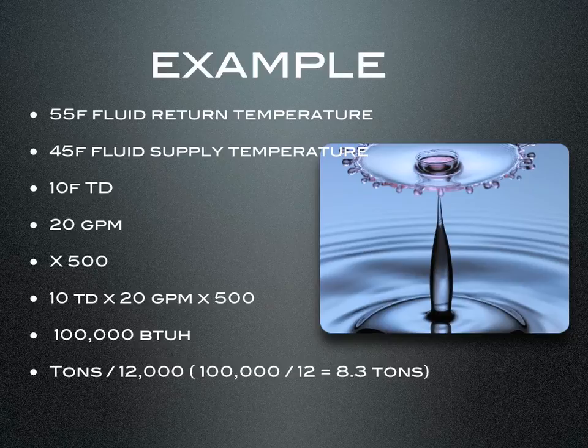One thing to keep in mind is every process is different. Processes are going to have different temperature differences, different supply temperatures, different gallons per minute. As long as you can take your temperature difference between the entering and leaving water temperature and multiply by gallons per minute, then times it by 500, you'll always come up with your BTUH.